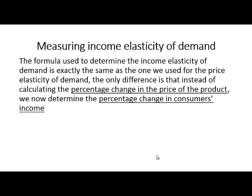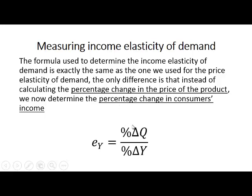The formula we use to determine income elasticity of demand is more or less the same as the one we use for the price elasticity of demand. But instead of calculating the percentage change in the price of the product, we will now determine the percentage change in consumers' income. So the formula is the percentage change in the quantity demanded of a product divided by the percentage change in the income of consumers. That will give you income elasticity of demand.